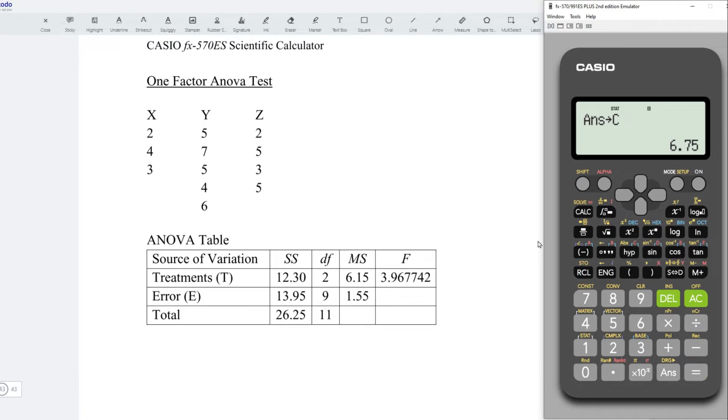And we can now determine sum of square error. Very simple. Press alphabet A plus alphabet B plus alphabet C. Press on equal, and we should obtain the correct sum of squares.